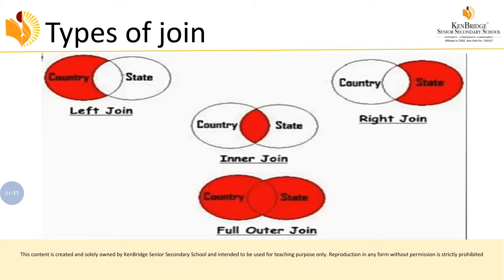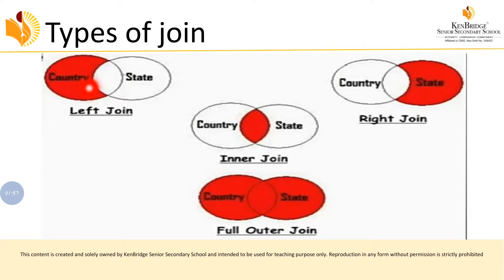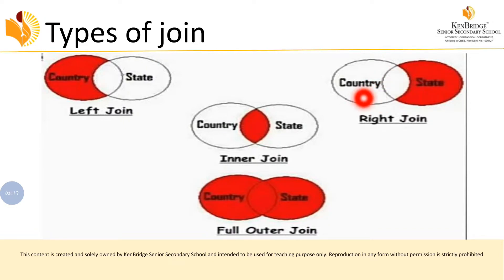This is a pictorial representation of the types of joins. Here we have a country table and a state table. If you combine both tables and the result comes from the leftmost table, that is called a left join. If the result comes from the rightmost table, that is a right join. For inner join, only the common part of the two tables will appear in the result.